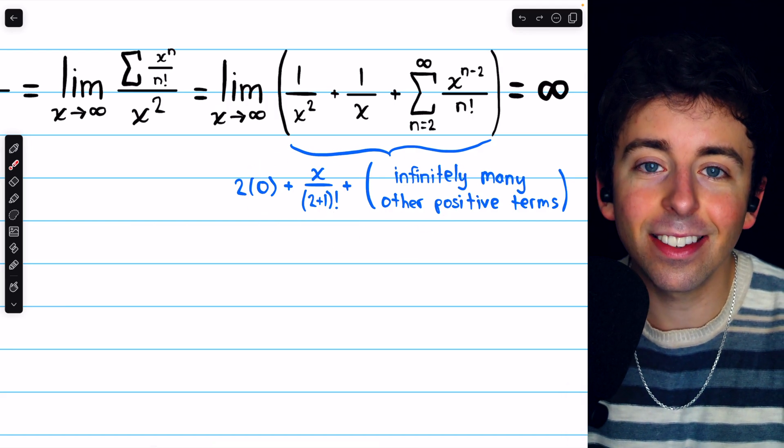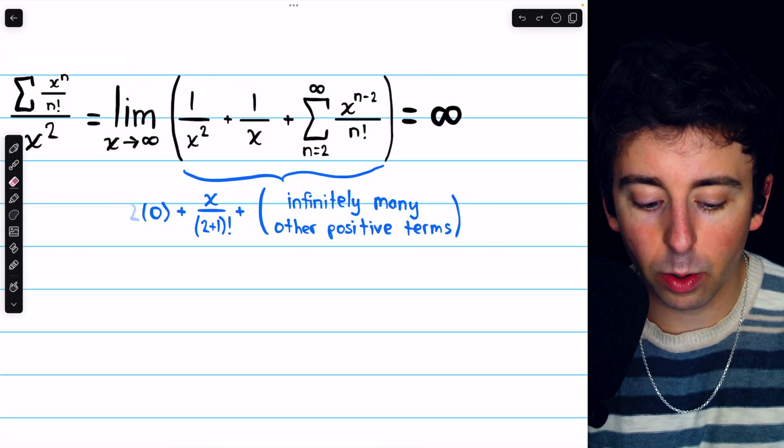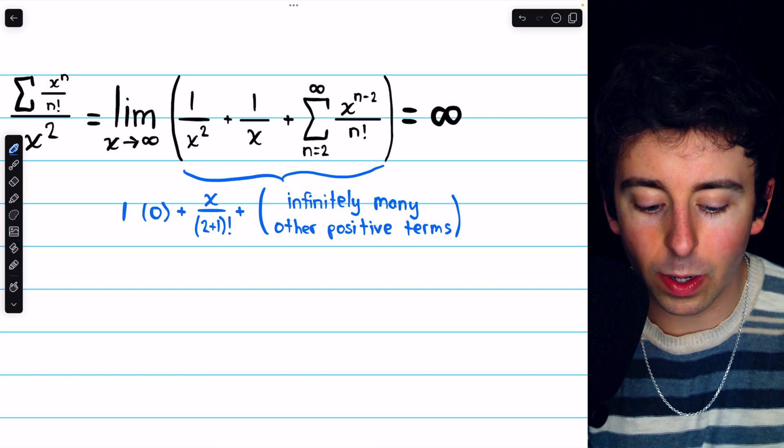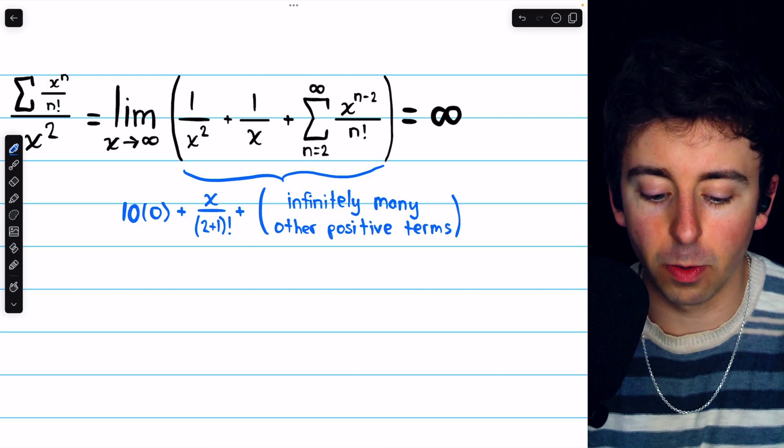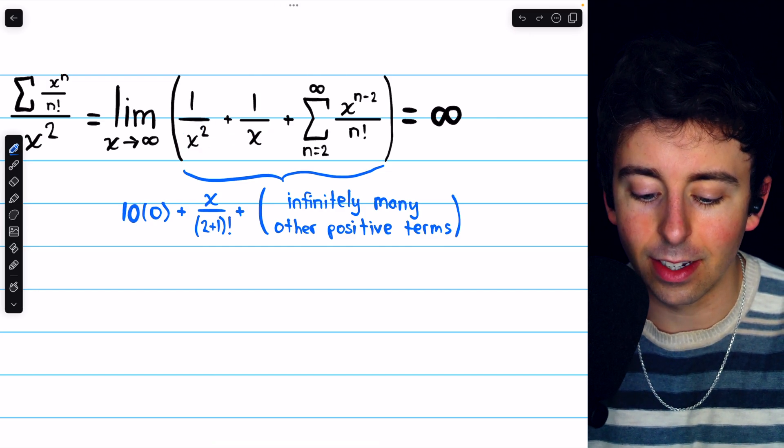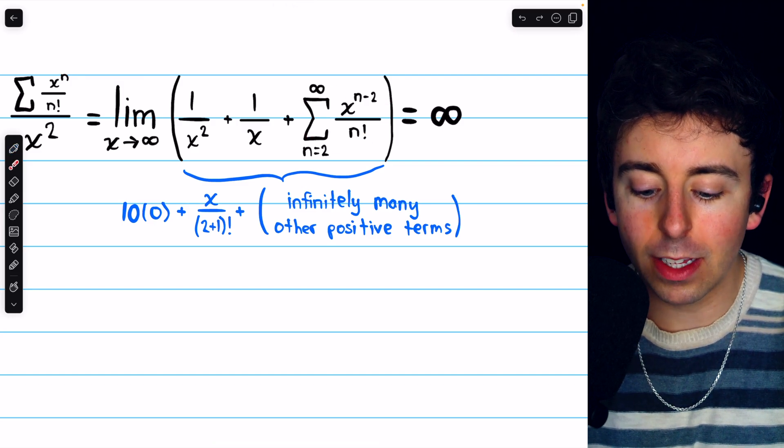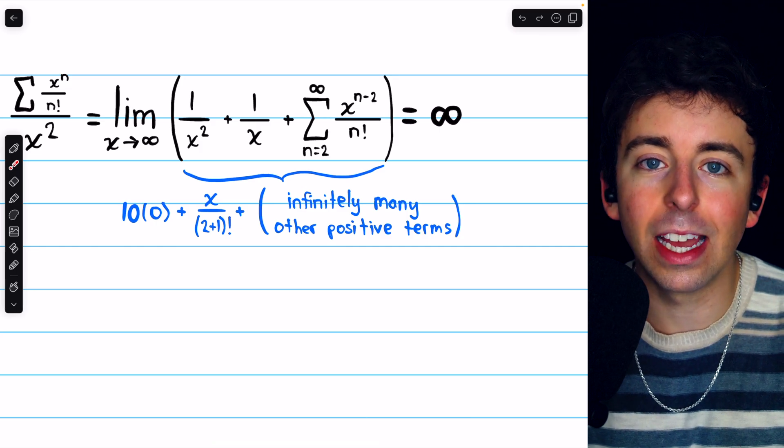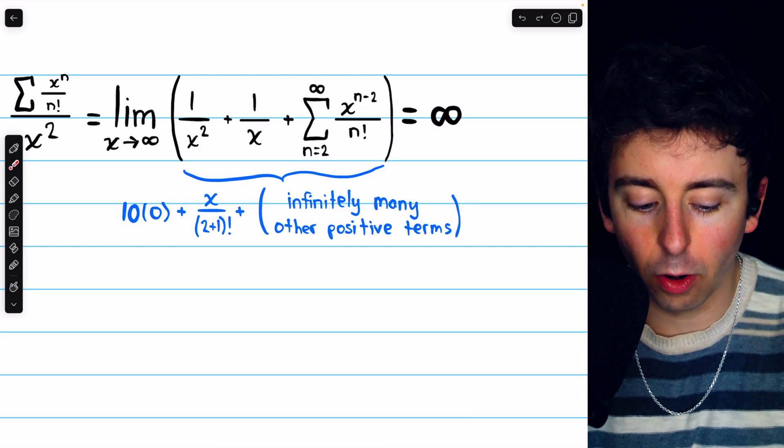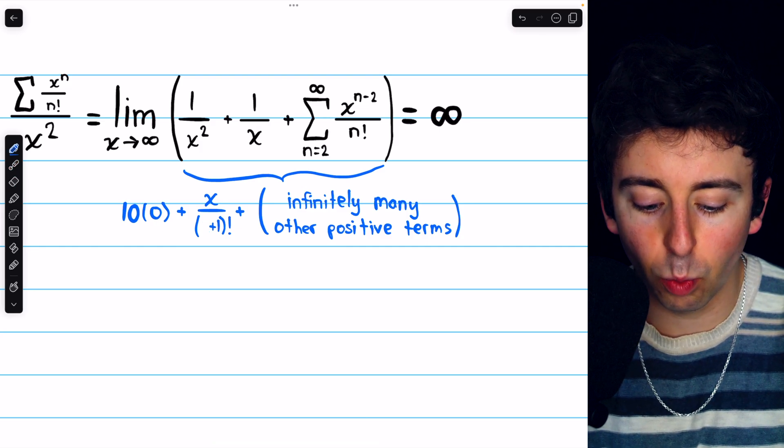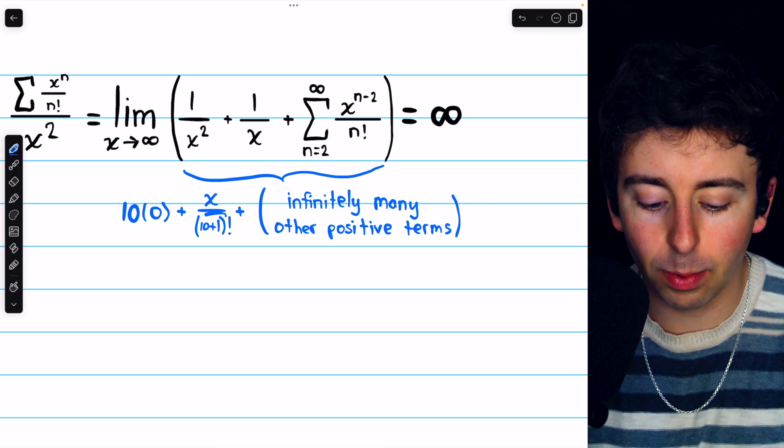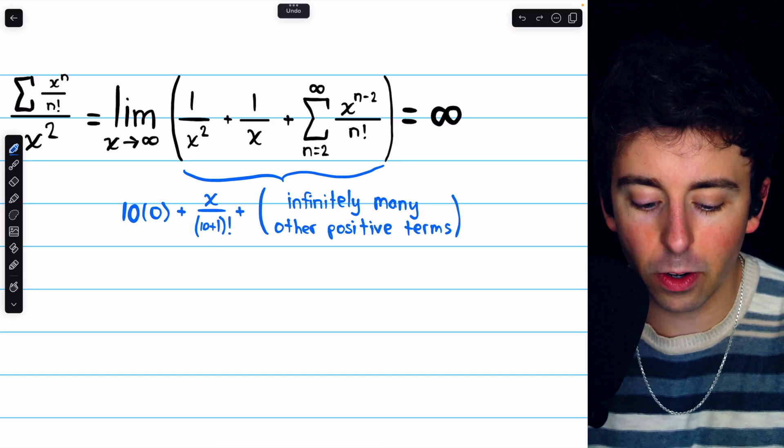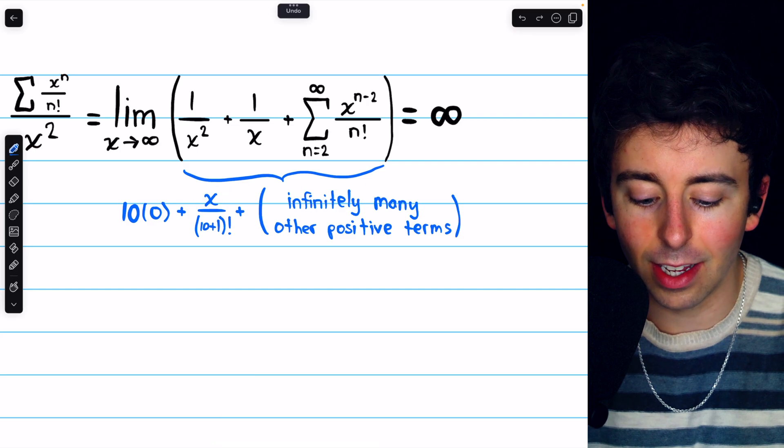If it were x to the power of 10, we could have taken out 10 terms from the series that would have x's in the denominator. Then in the rewritten series, we would start at n equals 10. And that first term would be 1. But then the next term would be the 10 plus 1th term. And we'd have 10 plus 1 factorial in this denominator. And again, we'd get x in the numerator.